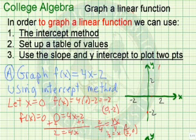So the line would look something like this. f of x equals 4x minus 2, and we use the intercept method. We found where it crosses the y-axis by letting x equal 0, where it crosses the x-axis by letting f of x equal 0.